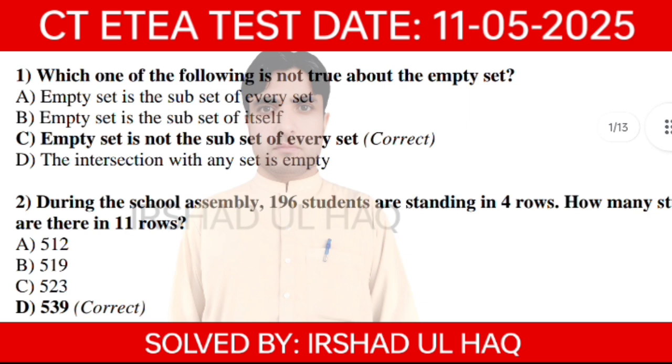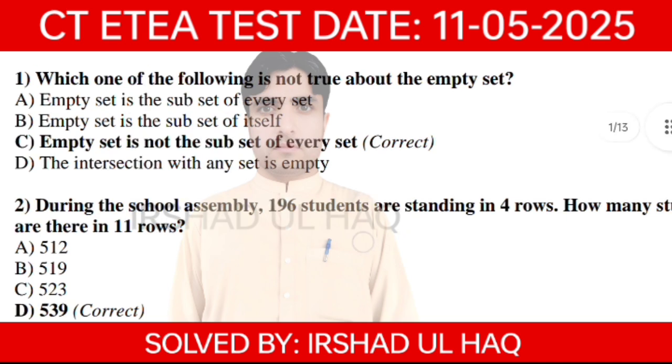Question number 2. During the school assembly, exogenous students are standing in 4 rows. How many students are there in 1 row?